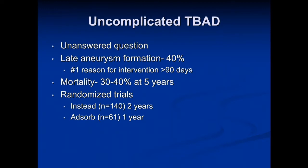What to do about uncomplicated Type B aortic dissection is still controversial. The problem with these patients who are managed medically is that late aneurysm formation occurs in about 40%, and the number one reason for intervention greater than 90 days is late aneurysm formation. These patients do not enjoy the same survival as their age and sex-matched cohorts, and mortality is still 30% to 40% at five years.